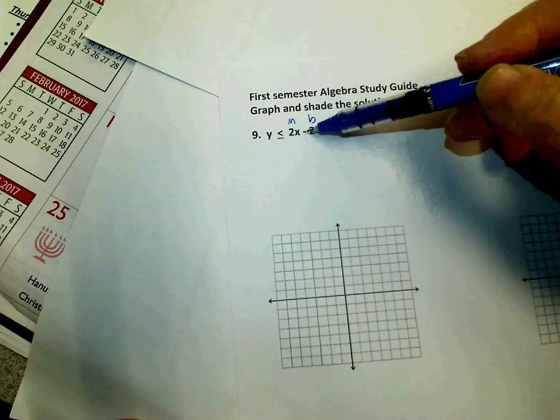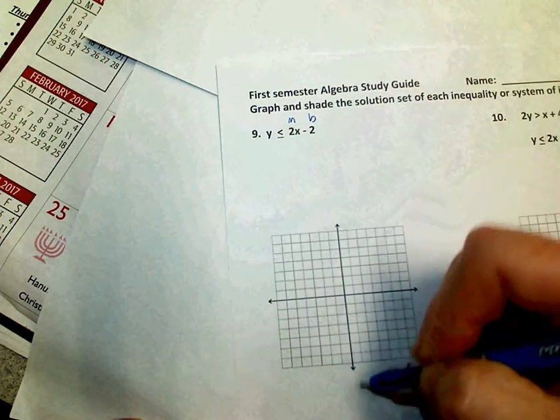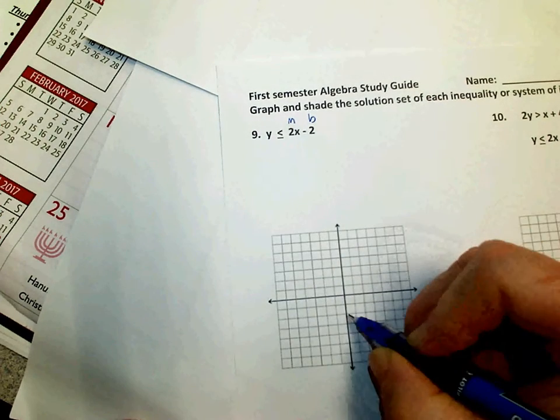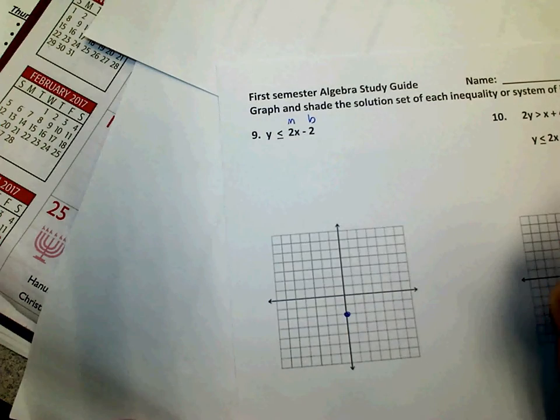So I'm going to start at the y-intercept of negative 2, and I'm going to find that on the y-axis and put a dot at negative 2.